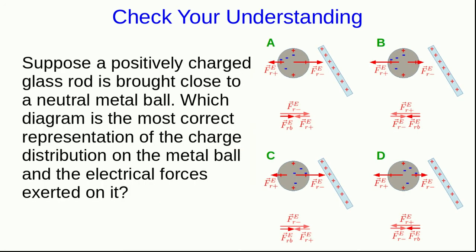It's time for a question to check whether you're following along. So, suppose that instead of using a negatively charged rod to polarize a ball, we bring a positively charged rod close to a metal ball. So, which of these four diagrams is the most correct representation of how the charges will be distributed on the metal ball, and the sizes of the forces exerted on it?